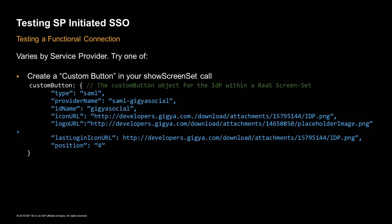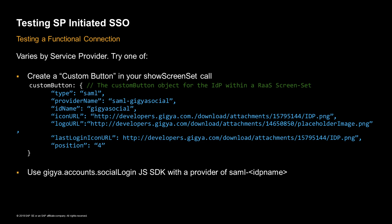With a service provider there are a few ways to initiate a connection. You can create a custom button on your show screen that will include key information like the fact that it's a SAML connection, the identity provider name, and you can also pass in custom button images. You can also make a call to the social login JavaScript SDK with the provider's SAML dash and then the identity provider's name.